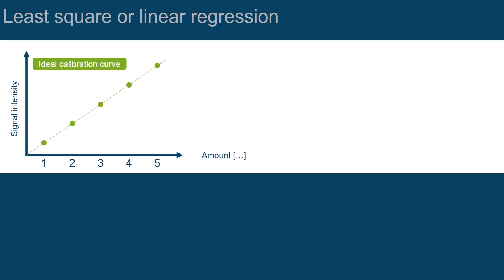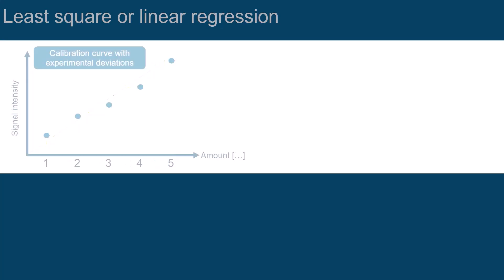So far we have been looking into ideal calibration curves, where all observed values are on a straight line. In the real world, you can expect to have deviations in signal intensity, and we would need to decide how to best draw a line between these values. This can be done by a least square regression.